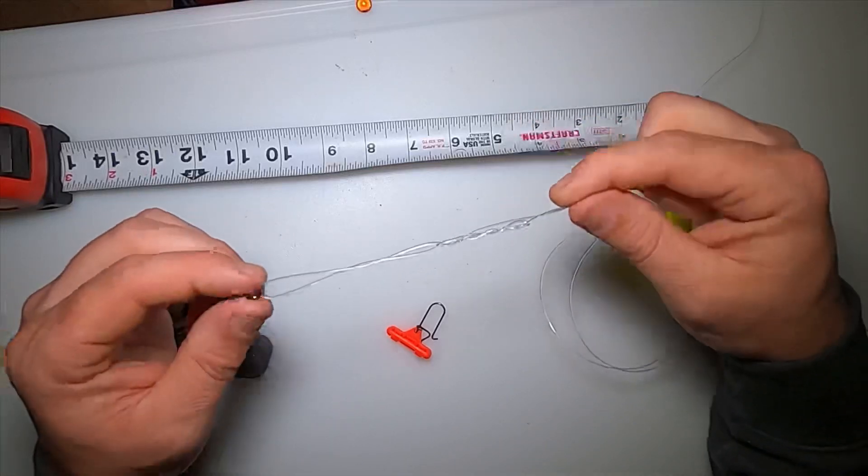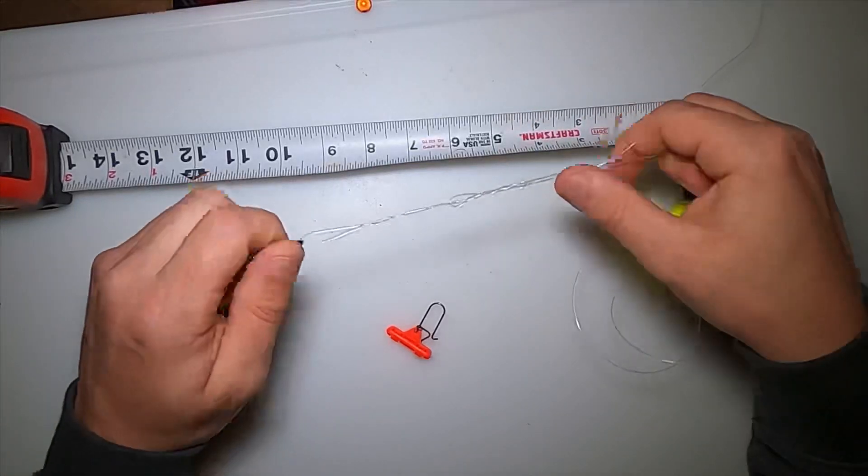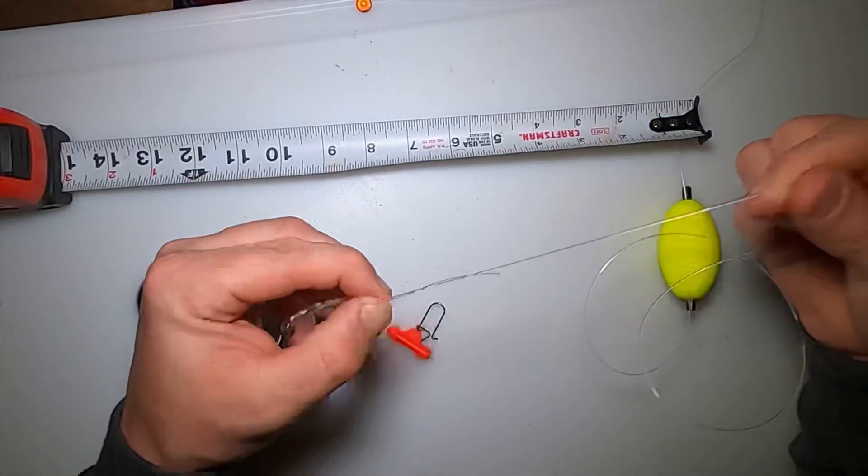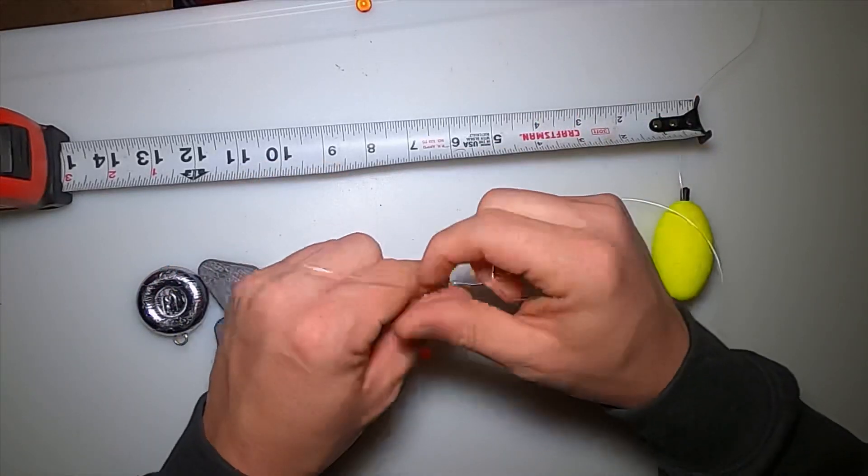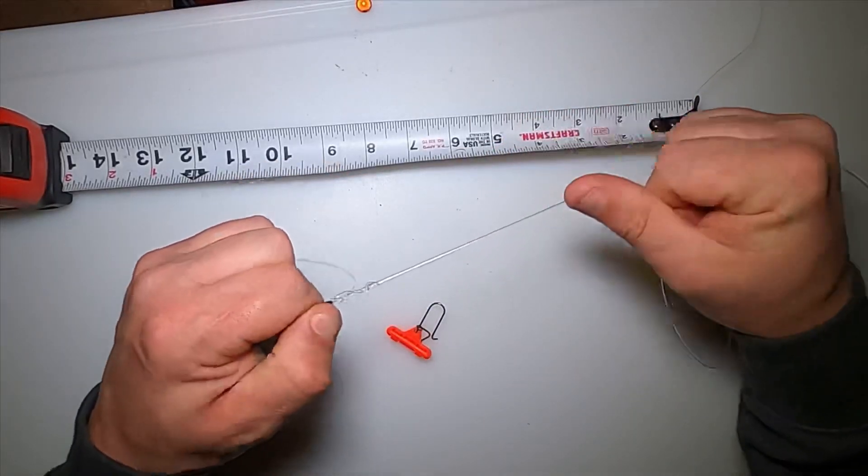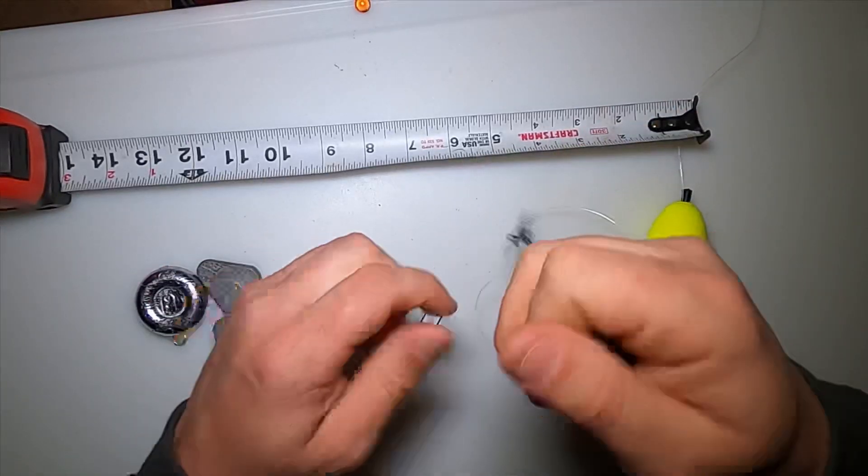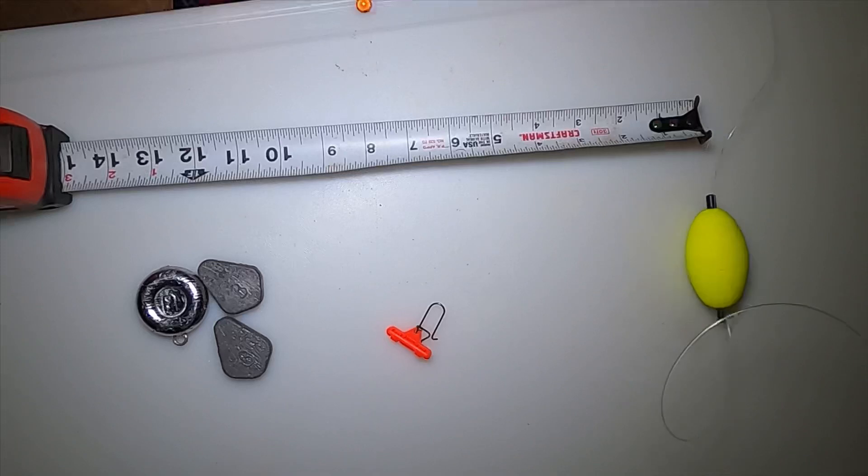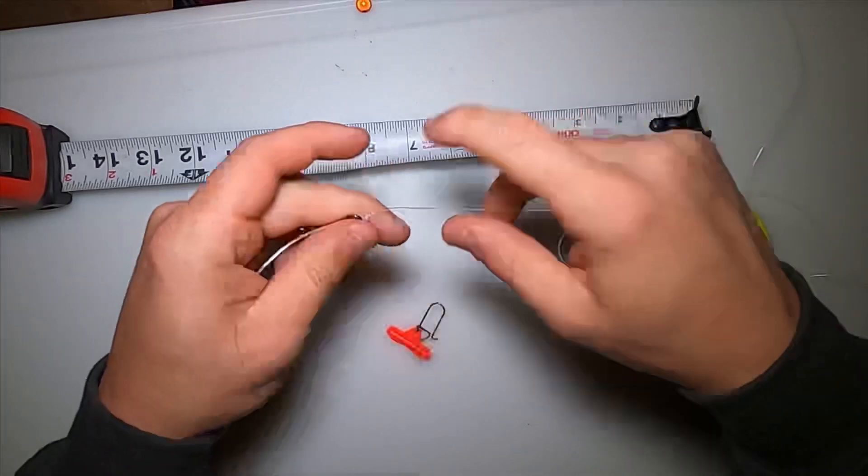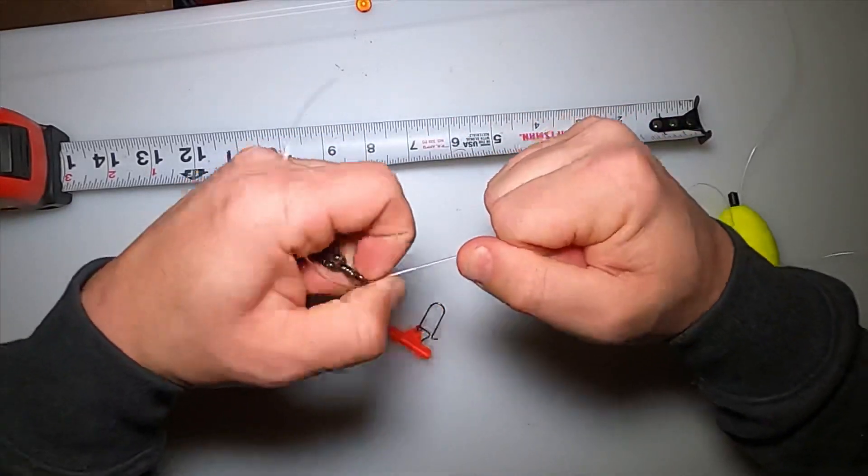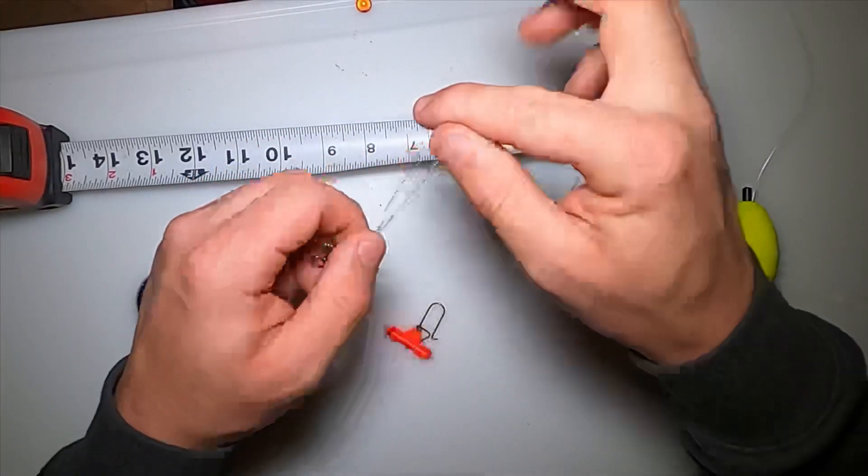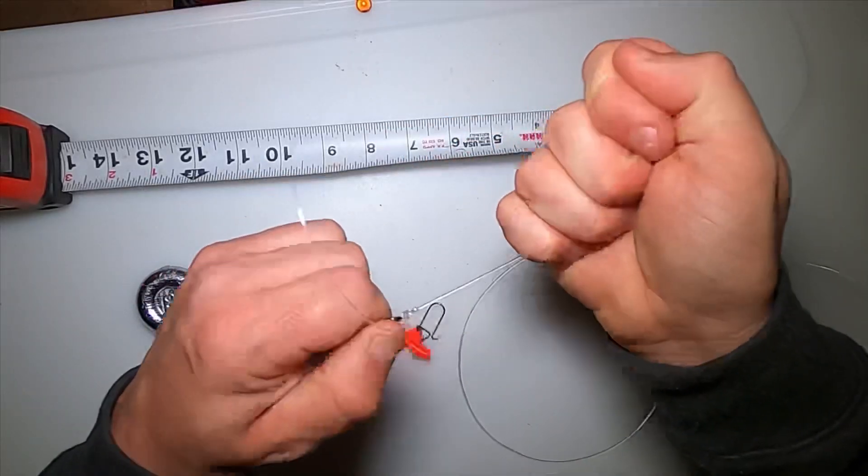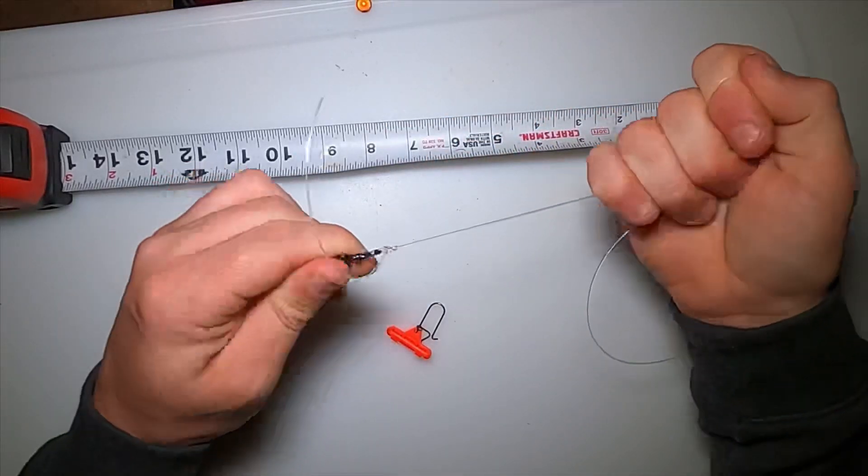Right here I want to wet the line so there isn't any friction. I'll pull it down some where some people have tightened it before. You just want to bring it down with your finger and pull tight on this end and this end, and it'll eventually come out like that.